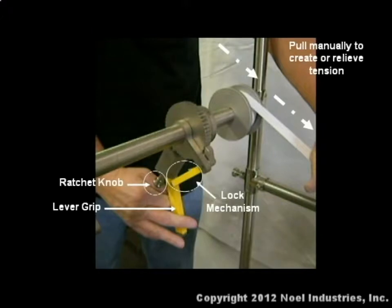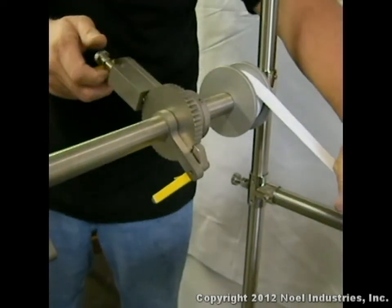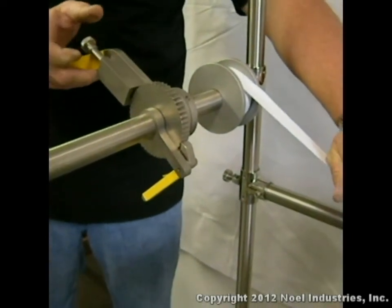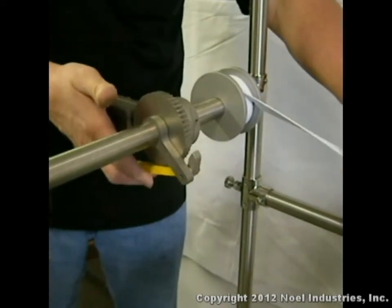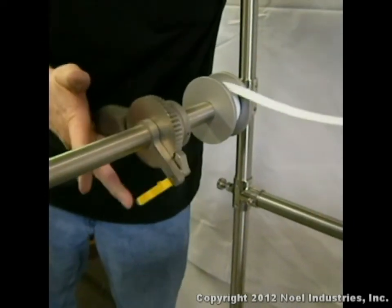Step 1: Hold the strap manually to relieve tension from the ratchet. Step 2: Pull out the ratchet knob and rotate it counterclockwise 90 degrees. Step 3: Lift the yellow lock lever located beneath the ratchet wheel to disengage the lock.